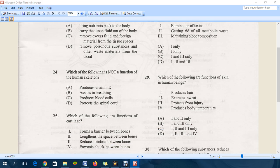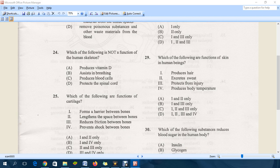Moving down to question 29: which of the following are functions of skin in human beings? We have produce hair. C is the correct answer - we have produce hair, then we have excrete sweat, and then we have protect from injury. D, which says produce body temperature, that is a no-no.